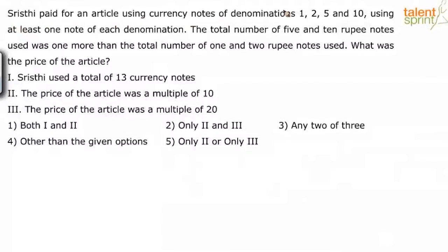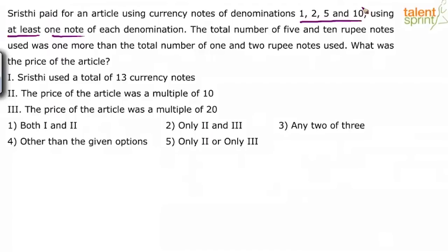Trishti paid for an article using currency notes of denominations 1, 2, 5 and 10, using at least one note of each denomination. The total number of 5 and 10 rupee notes used was one more than the total number of 1 and 2 rupee notes used. What was the price of the article?